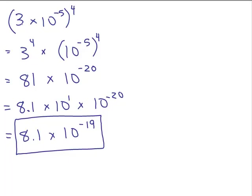Keep in mind, this original number may not have been written in scientific notation — it would have been written as .00003 to the 4th power. That's a really tiny number to the 4th power. It's easier to first rewrite .00003 as 3 times 10 to the negative 5 and put it in scientific notation to get your final answer. You can try this on a calculator and see what comes up — it will show in scientific notation if you understand how to read your calculator.